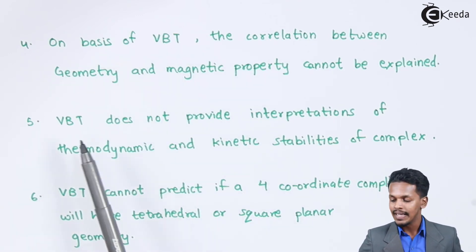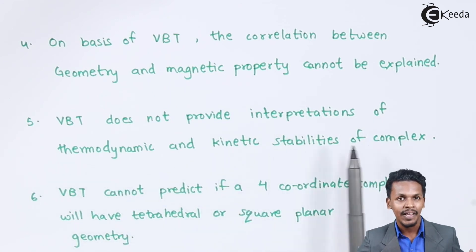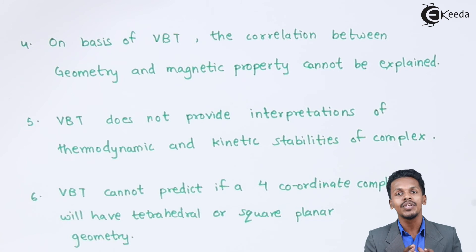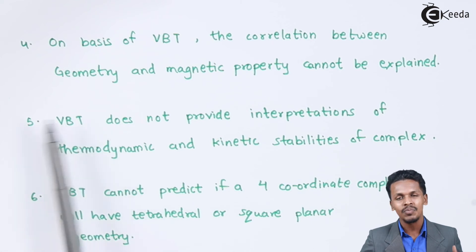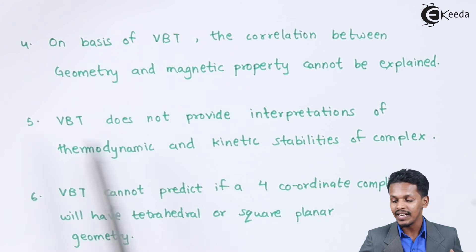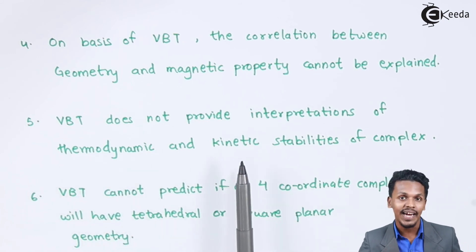Talking about the next point: valence bond theory does not provide the interpretation of the thermodynamic and kinetic stabilities of the complex. Whenever it comes to the thermodynamic or kinetic stability of the complex, we should know particular data related to the energy, and from that data we can determine whether that complex is stable or not. But in valence bond theory, that kind of energy level detail is not explained, and hence we can't provide information about whether the complex is stable thermodynamically or kinetically.